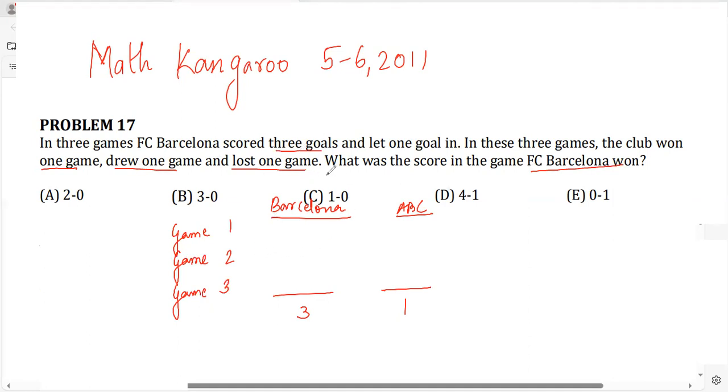So for example, let's go with the option. Suppose, what was the score? If it was say 2-0, suppose they won. So this was 1 and this was 0. And for them to draw, this will become a 1 and a 0 because they let only one goal in.